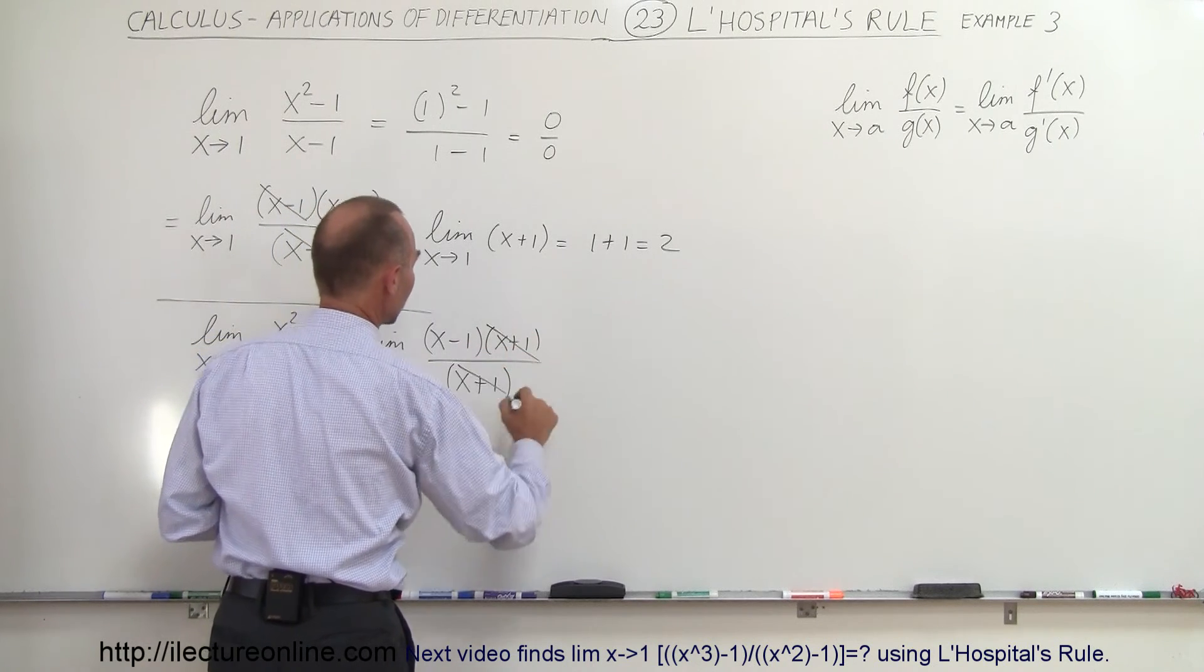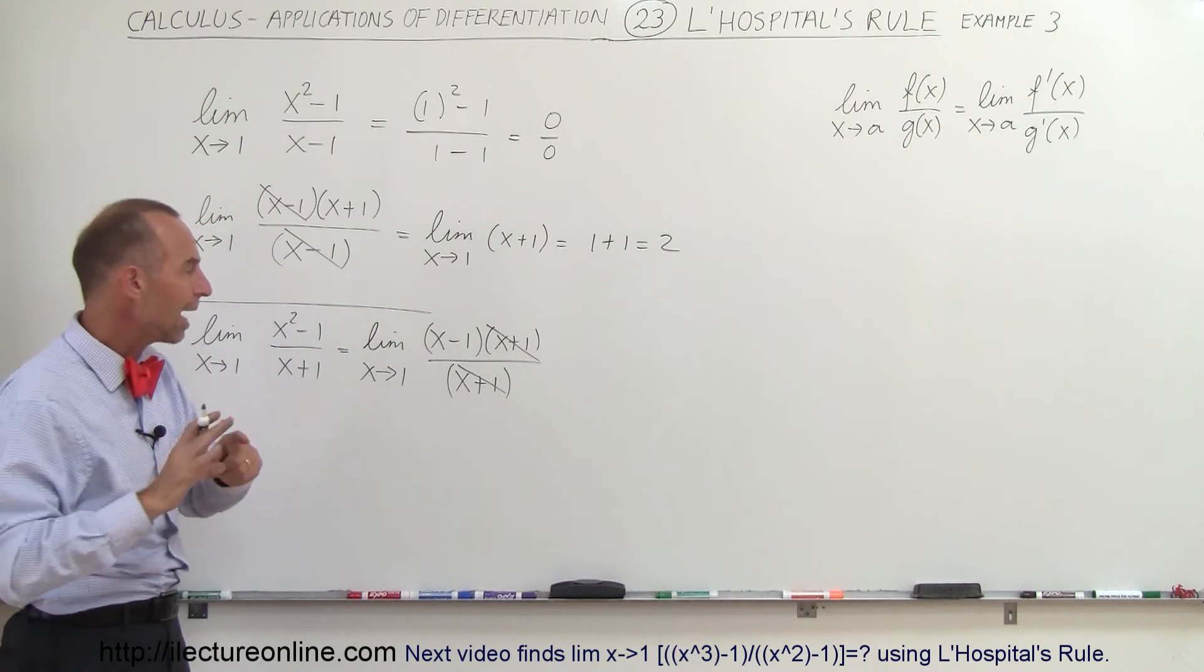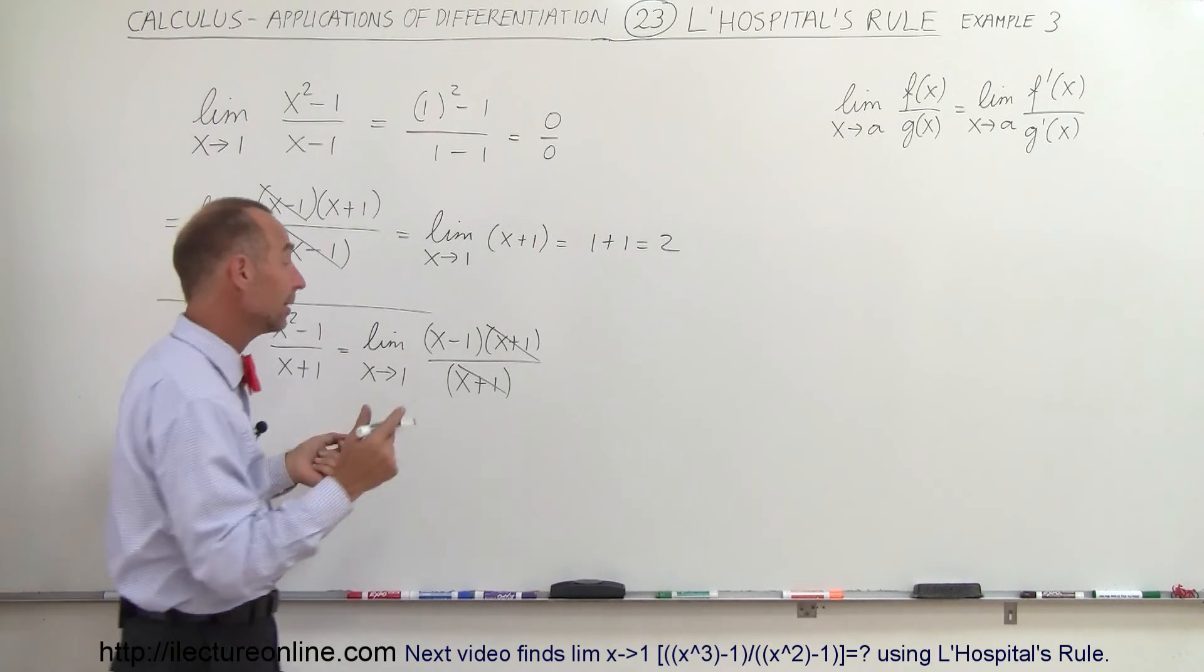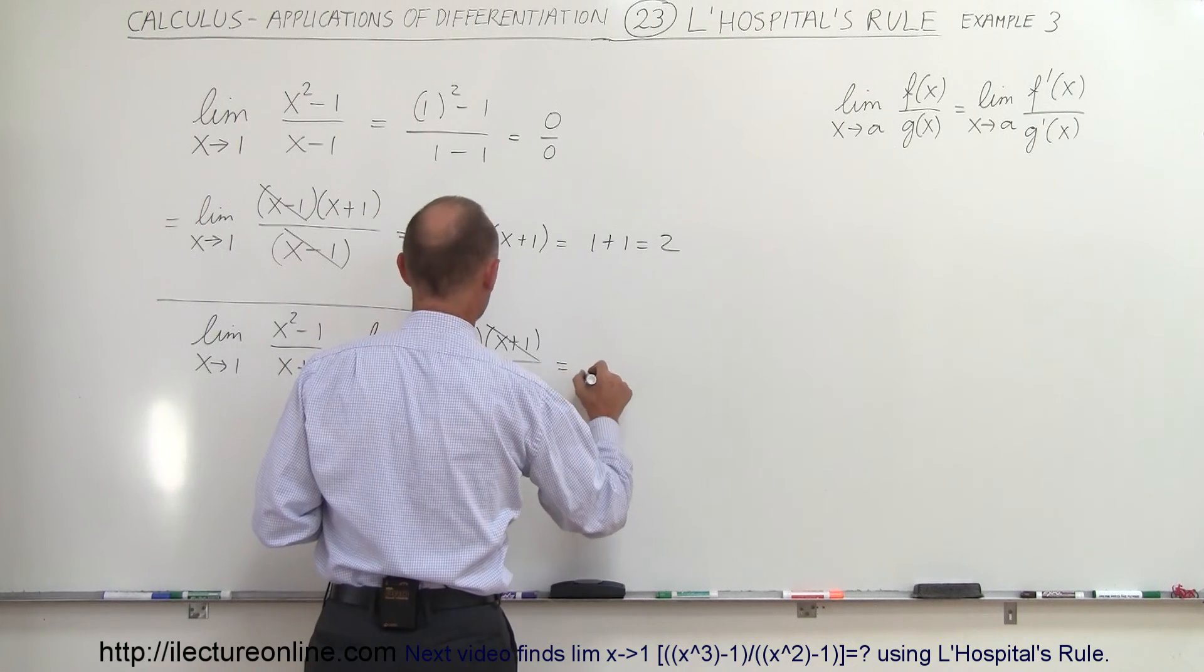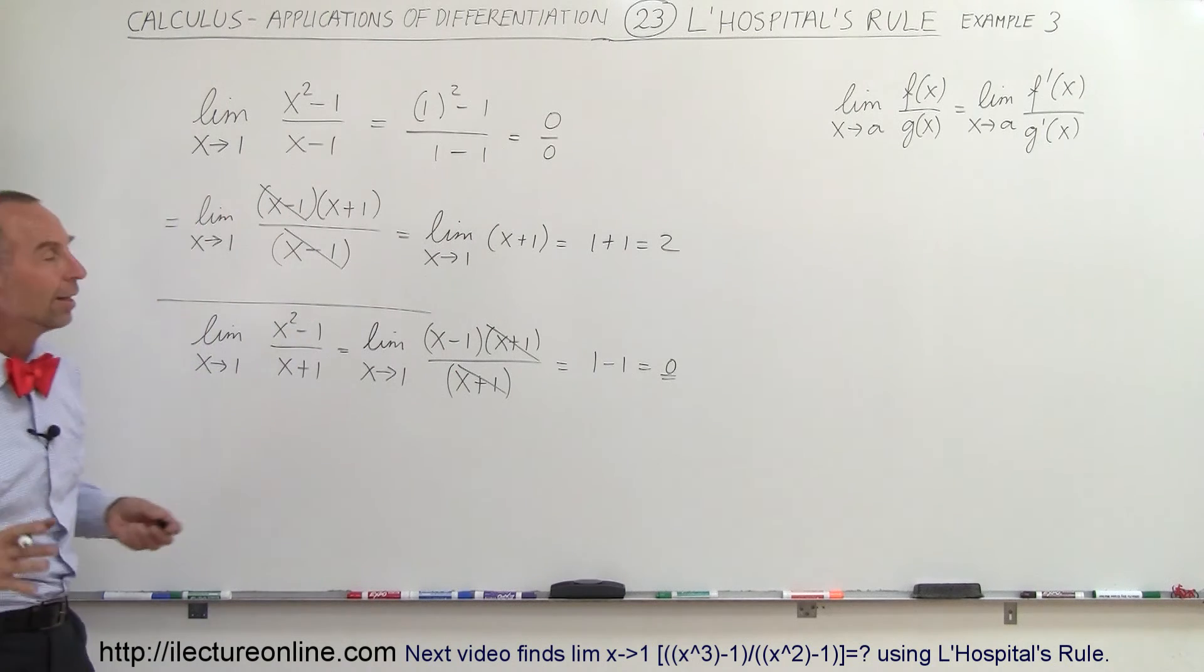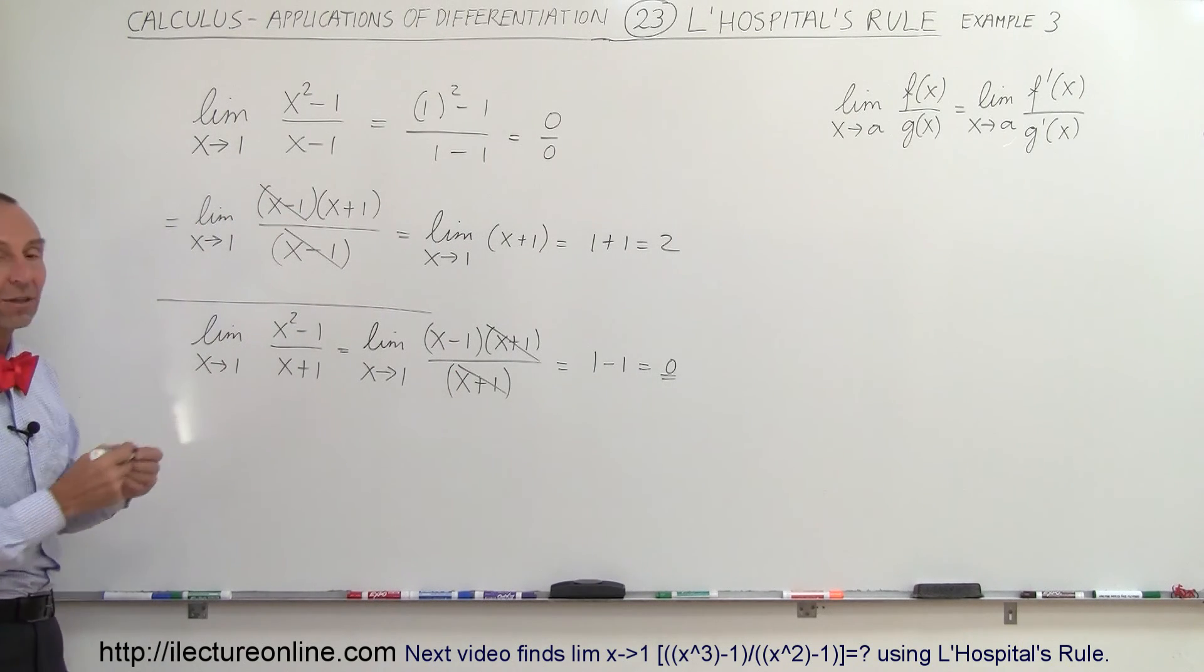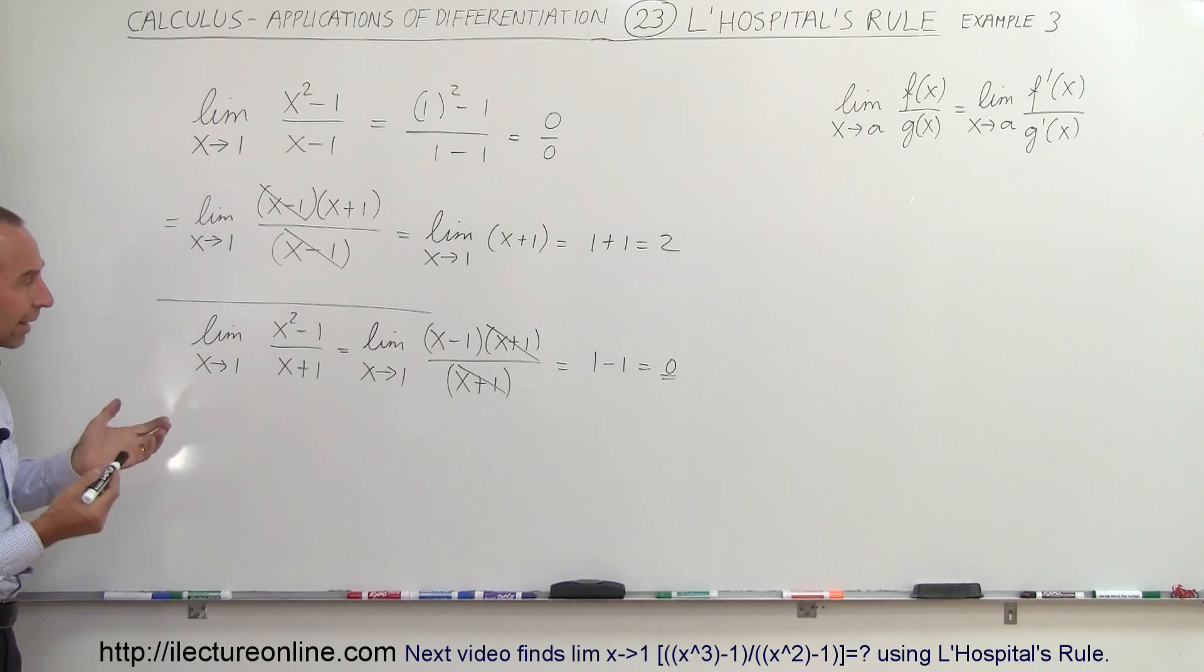In this case the x plus 1 would cancel out and now you're taking the limit as x approaches 1, but since you don't have anything but 1 in the denominator that is fine. This is equal to simply 1 minus 1 which is 0, and that is a legitimate answer as well. So either way we don't have to use L'Hospital's rule, we can simply simplify it by factoring the numerator and the denominator and then canceling out common terms, and that's how we do that.